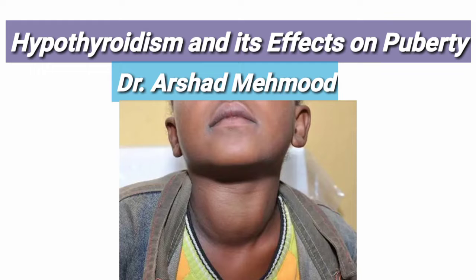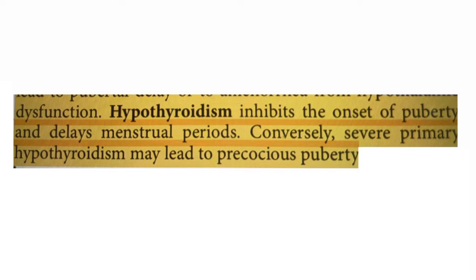Hypothyroidism inhibits the onset of puberty and delays the menstrual period. Conversely, severe primary hypothyroidism may lead to precocious puberty. So two things are here: one is delayed puberty in hypothyroidism, and second is precocious puberty, again in hypothyroidism.